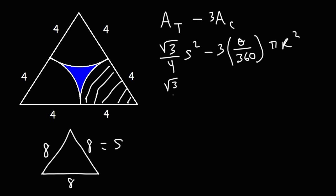We have the square root of 3 over 4 times s squared. S is 8. So this is going to be 8 squared minus 3. Now what we need to find is the angle. What is the angle of this sector?